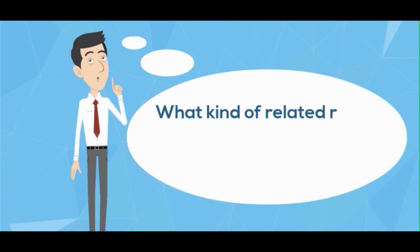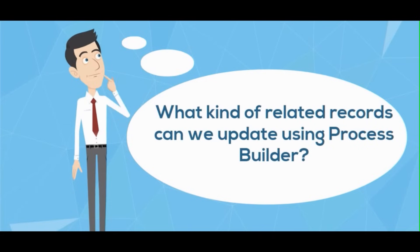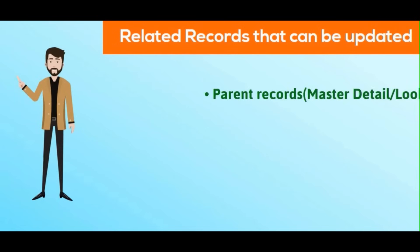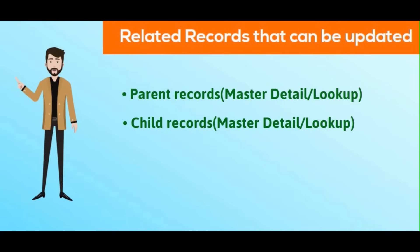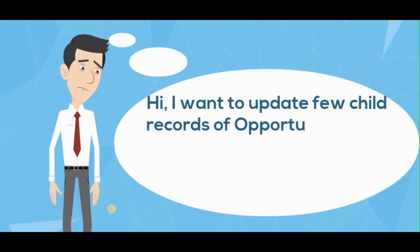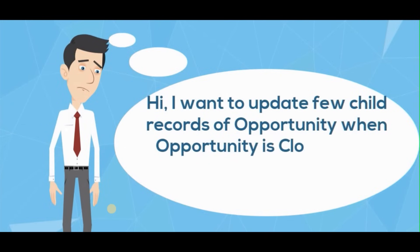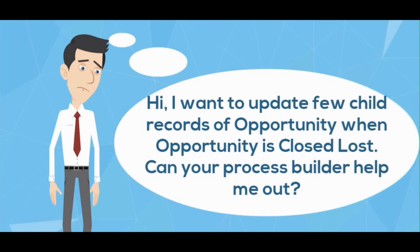What kind of related records can we update using Process Builder? It's a very good question — Process Builder can update both parent records and child records that have either master-detail or lookup relationships. Now, you want to update a few — not all — child records of an opportunity when it is Closed Lost. Process Builder can help. It has two ways: one is Update Related Records, and two is calling an Apex class. For learning purposes, I'll show you how to do this with an Apex class.